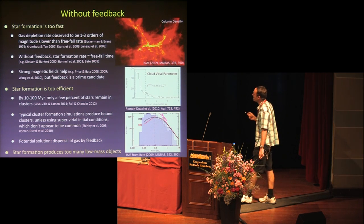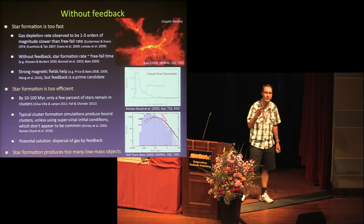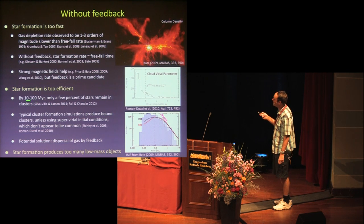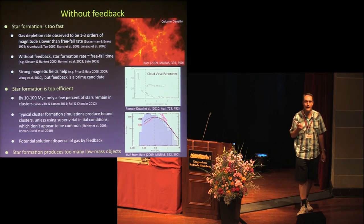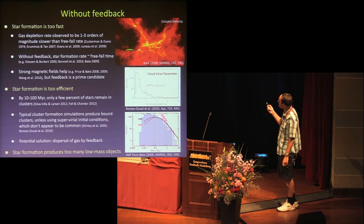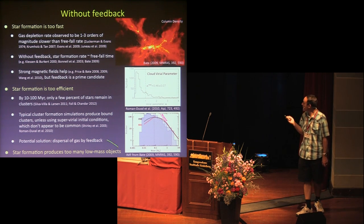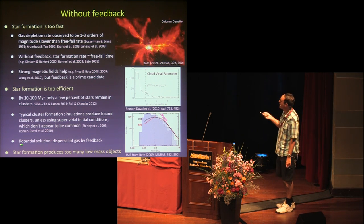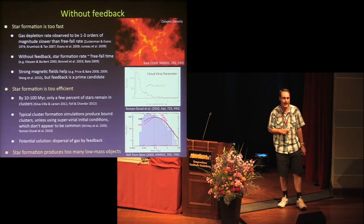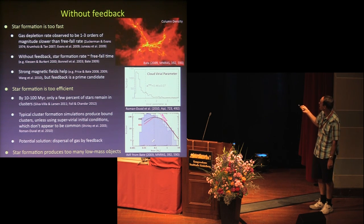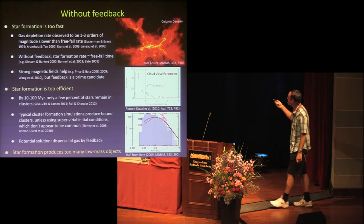Related to the rate of star formation is the efficiency. When we see star-forming regions in the galaxy, they tend to be very dense with high densities of new stars. But if we go to 10 to 100 megayears later, only a few percent of the stars remain in bound groups and clusters. Without feedback, simulations using bound initial conditions produce clusters that tend to stay bound. A potential solution is dispersal of gas by feedback. Additionally, star formation without feedback produces too many low-mass objects — way too many brown dwarfs.